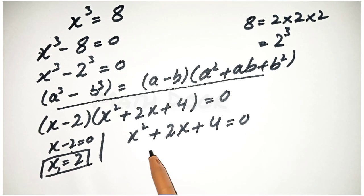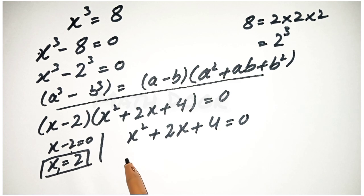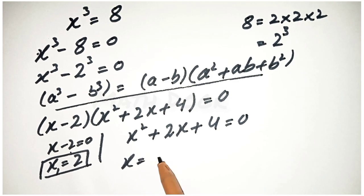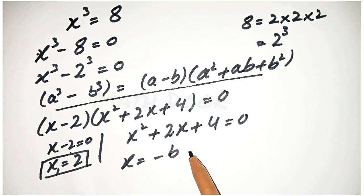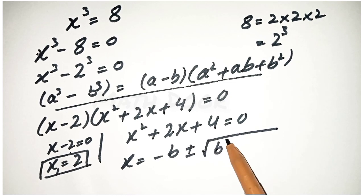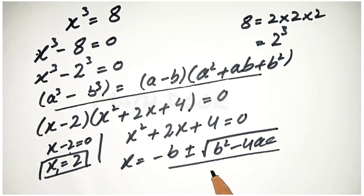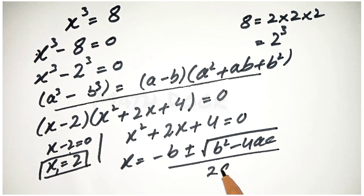We apply the quadratic formula, which is x is equal to minus b plus or minus square root of b square minus 4ac, over 2a.